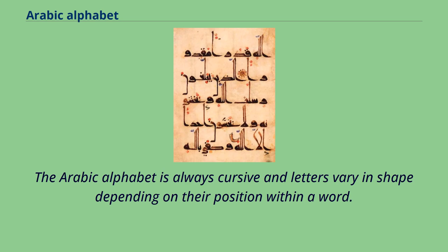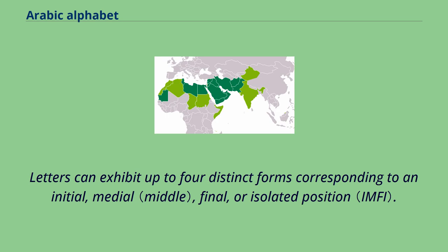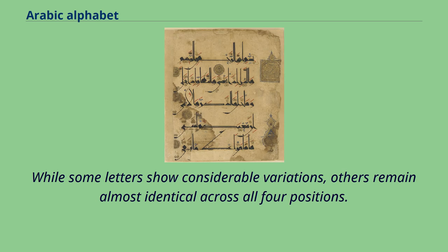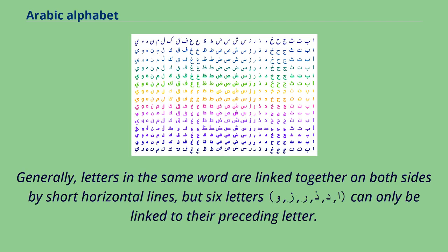The Arabic alphabet is always cursive and letters vary in shape depending on their position within a word. Letters can exhibit up to four distinct forms corresponding to an initial, medial, final, or isolated position. While some letters show considerable variations, others remain almost identical across all four positions. Generally, letters in the same word are linked together on both sides by short horizontal lines, but six letters can only be linked to their preceding letter.